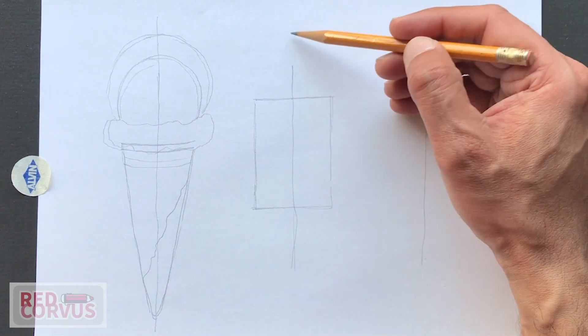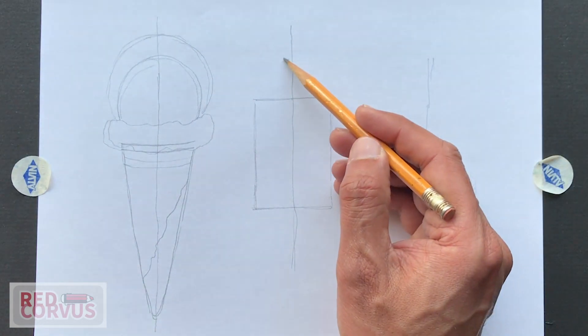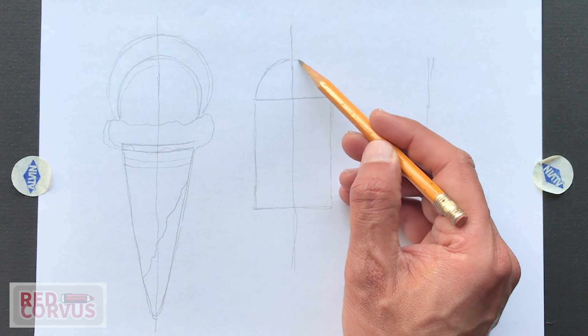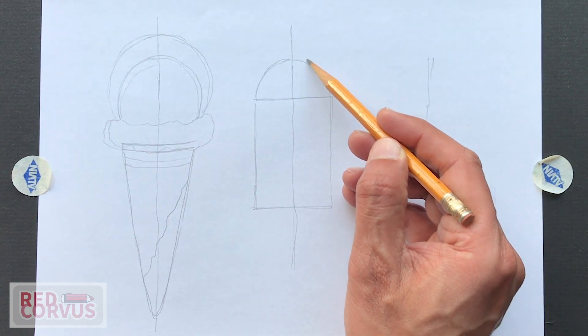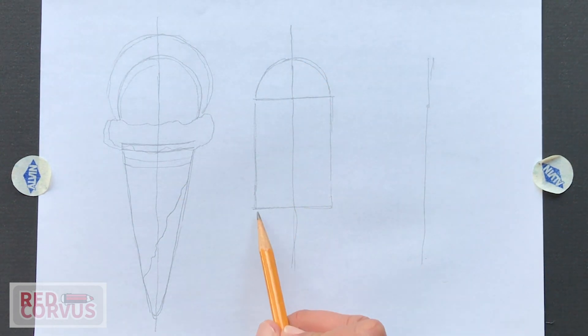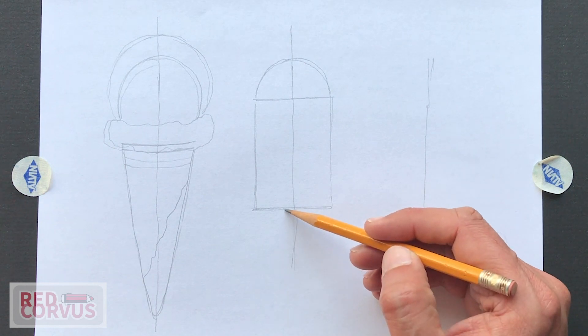And after drawing the rectangle, I'm going to turn the top into a semicircle. And finally, the stick.